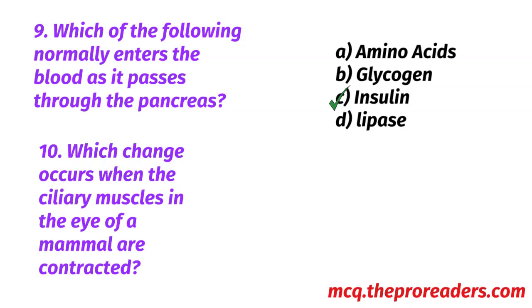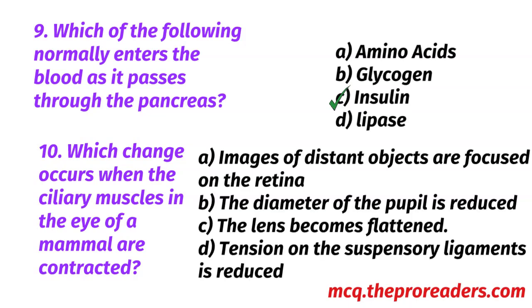Which change occurs when the ciliary muscles in the eye of a mammal are contracted? A. Images of distant objects are focused on the retina. B. The diameter of the pupil is reduced. C. The lens becomes flattened. D. Tension on the suspensory ligaments is reduced. Option D, tension on the suspensory ligaments is reduced, is the correct answer.